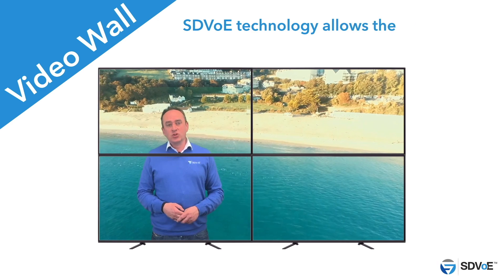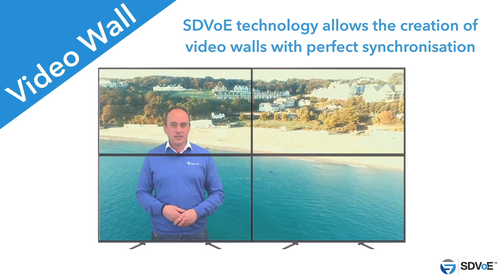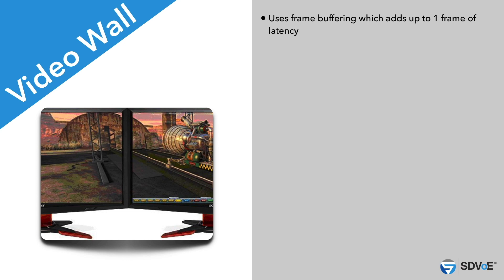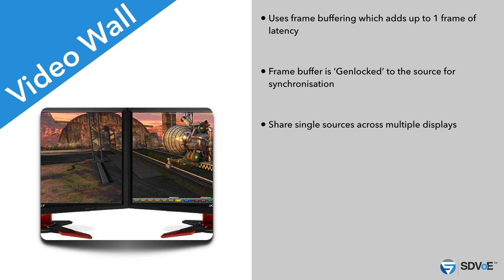SDVoE technology allows the creation of video walls with perfect synchronization. When the video wall mode is used, frame buffers are implemented. The frame buffer is genlocked to the source, resulting in all the receivers being synchronized to each other. The key benefit is the ability to synchronize multiple displays. Without a genlocked video wall, the image would suffer from a bad stuttering effect and tearing between the screens — this is when an object moving between two screens is not aligned with itself due to one screen being ahead of the other.